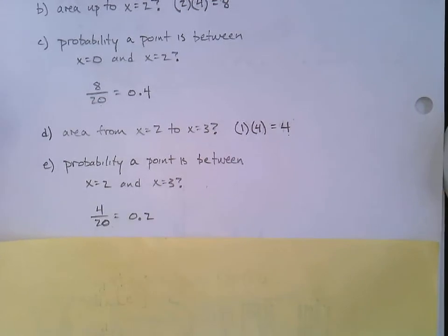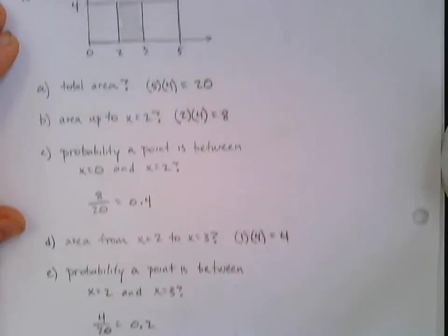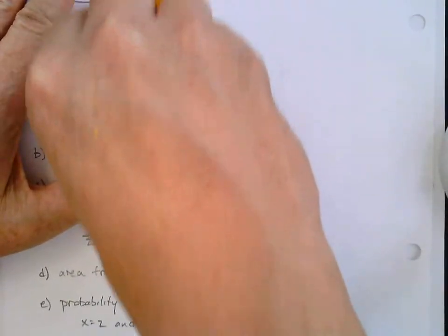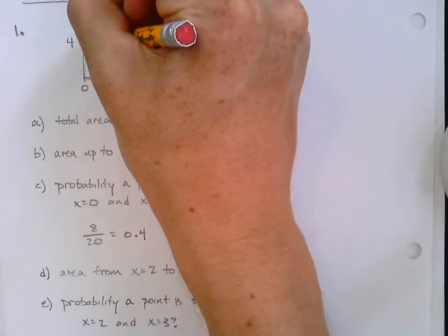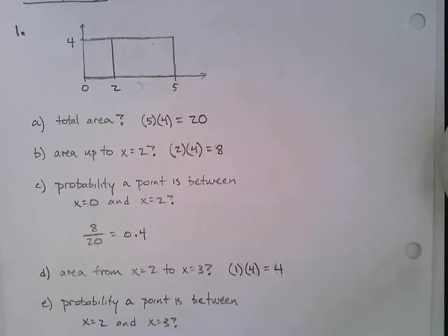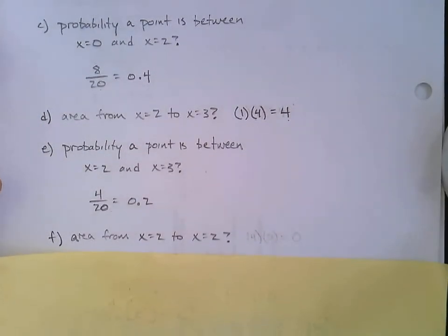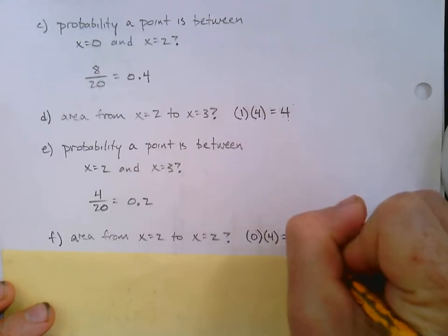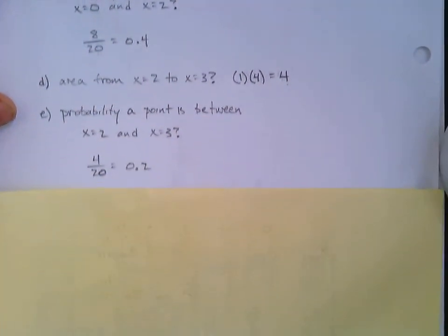And now here's where things get a little bit bizarre when it comes to the continuous random variable. Let's look at this question. What is the area from X equals 2 to X equals 2? So going back to the drawing. Let's get rid of that 3 and get rid of all that shaded area. And we'll just draw this line at 2. What is the area from X equals 2 to X equals 2? And you're like, that's a weird question to ask because there's not any area there. It's just a line. And, yep, base times height. This time the base would be 0. The height is still 4, but with the base being 0, the area, of course, would be 0. It's just that line. There's no area at all.